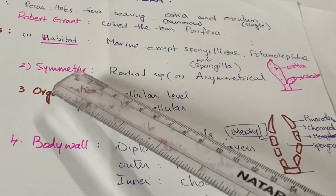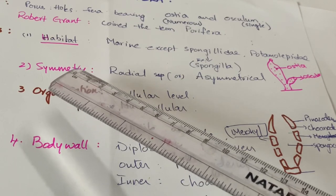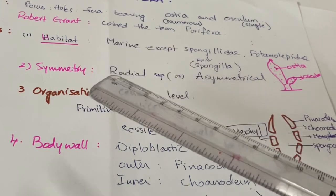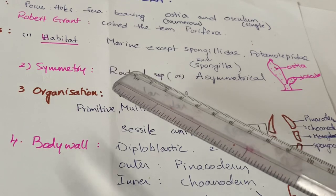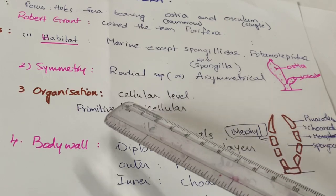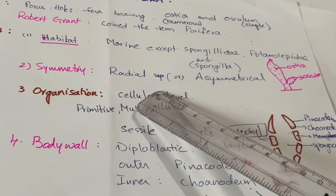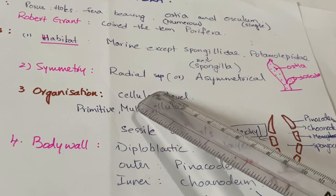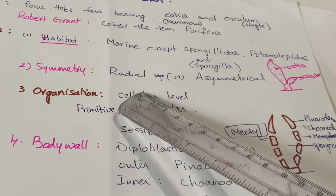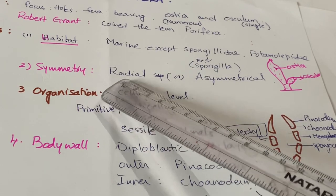Next, coming to symmetry. Symmetry is the arrangement of different parts of the body in a geometrical plan, such that we can cut an organism into equal halves in one or more planes. The symmetry of sponges is radial symmetry — if we cut an animal passing through the center, it is divided into equal parts.